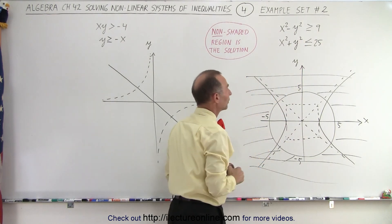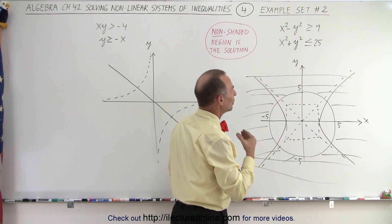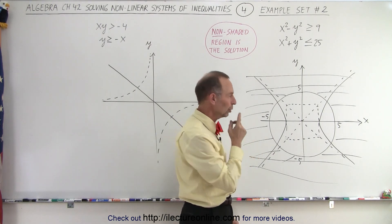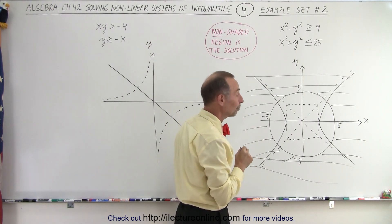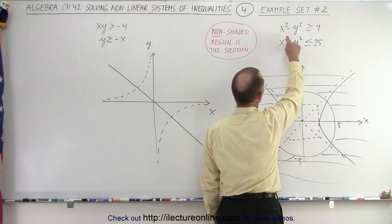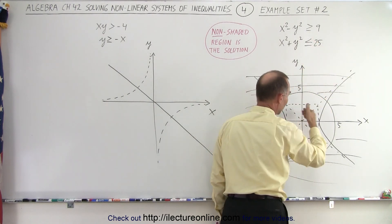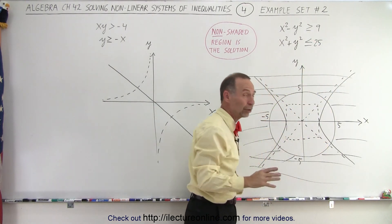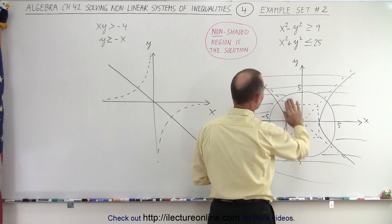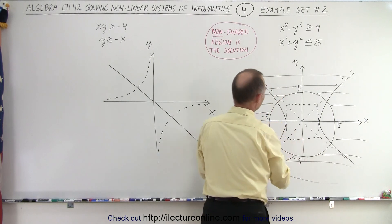Now the hyperbola. It says greater than or equal to 9, which means the origin is not included — the region bound by the origin. But if you just want to make sure, take the point (0, 0) and plug it in. Is 0 greater than or equal to 9? The answer is no. That means the region that includes the origin is not part of the solution.